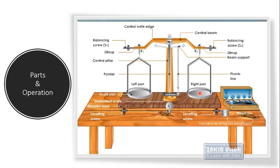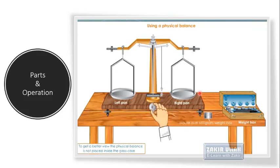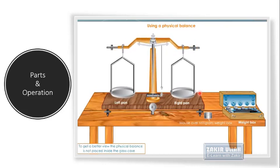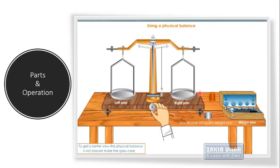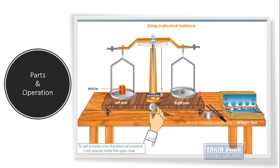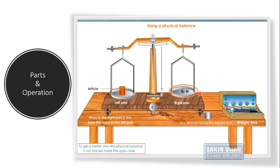To operate a physical balance or analytical balance in the laboratory: first adjust the screws at the base, then loosen the knob to check the level and any error. If there is any error, adjust with the screws, then stop the balance. Place the object to be weighed in one pan and place known weights in the other pan. Start weighing again; if the weight is less, add more weight until the object and weights are balanced.